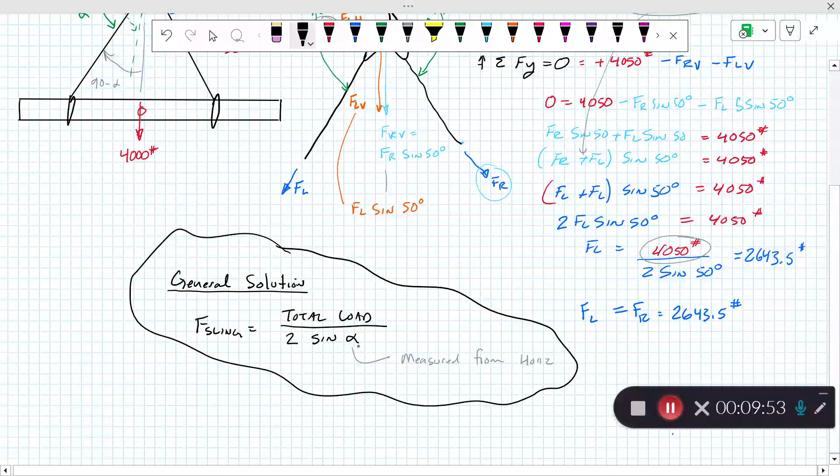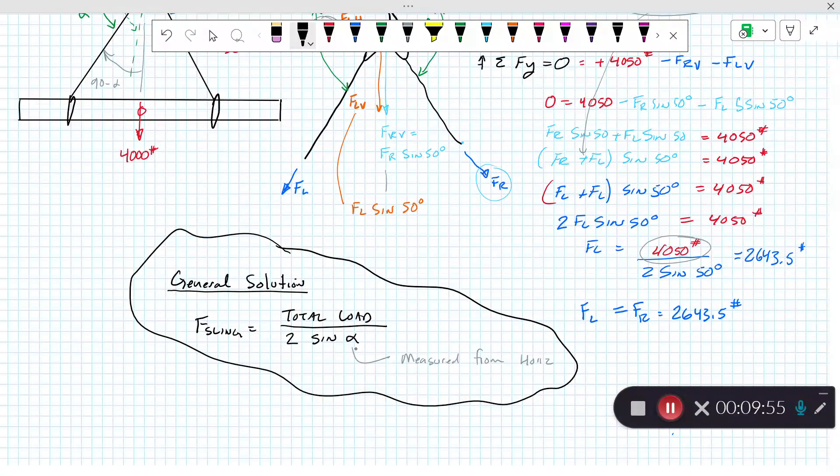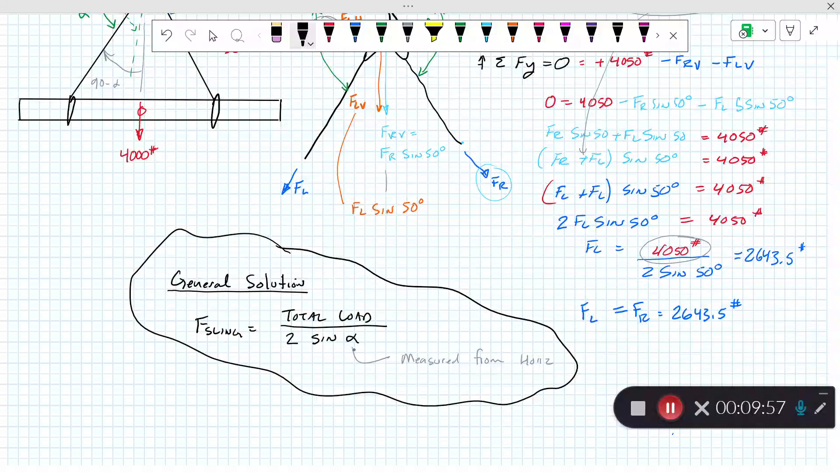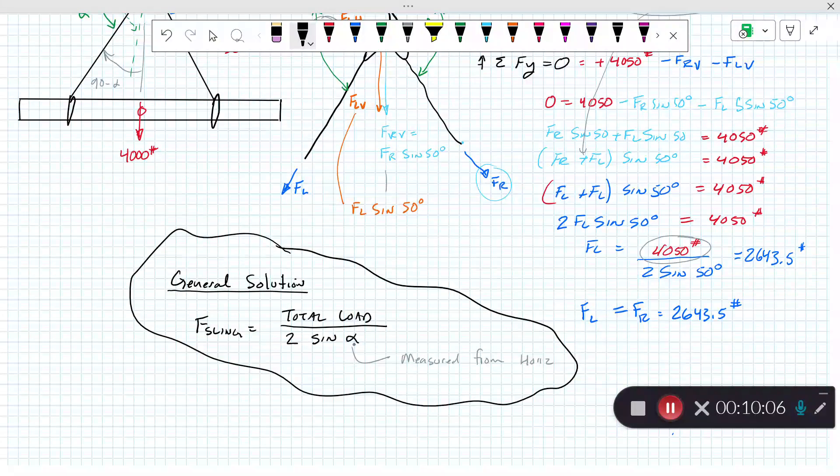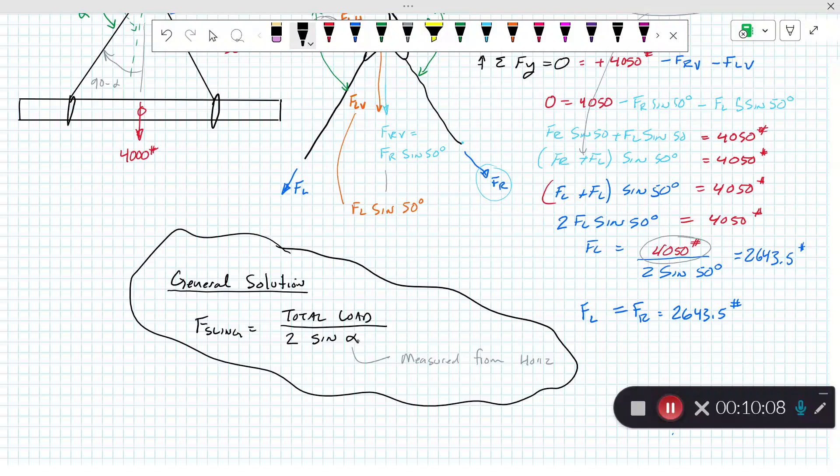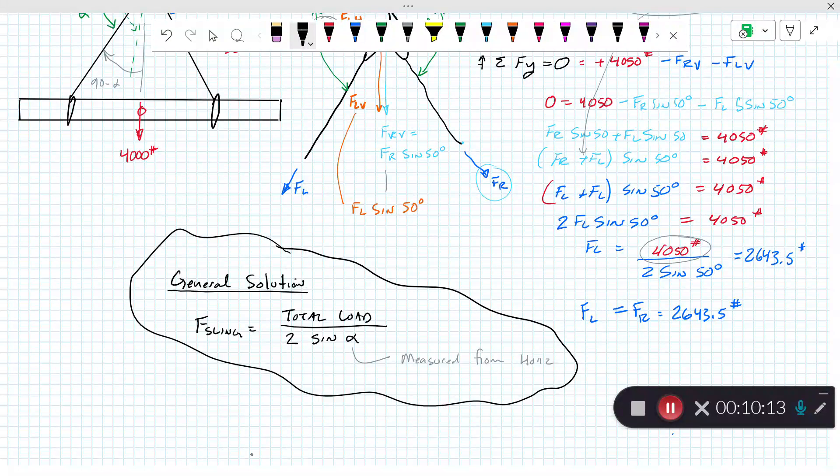Note that as alpha goes to zero, sine of zero goes to zero, and it's the total load over zero, and we get an infinite number. As alpha goes to 90, sine of 90 is 1, and the force in the sling is the total load divided by 2. And there we have it.